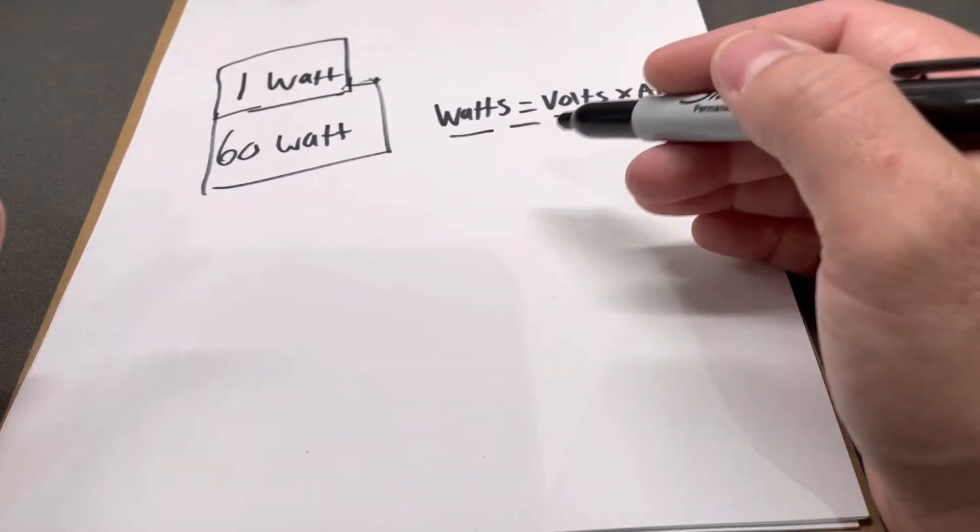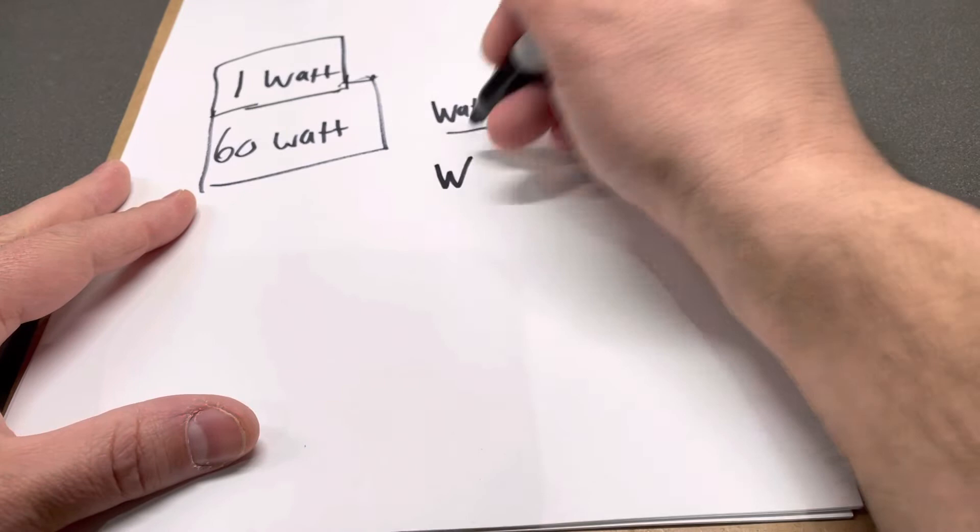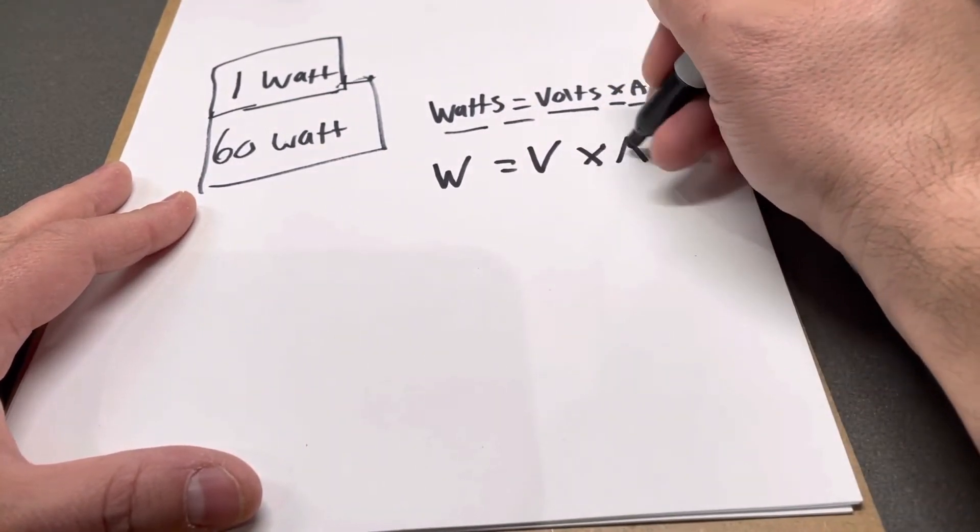There's also resistance that you can use separately, but this is just a basic calculation. You can go way more advanced. This is just the most simplistic version. So watts, which will be W, is equal to volts, which will be V, times amps, which is A. That's the formula we're going to use.